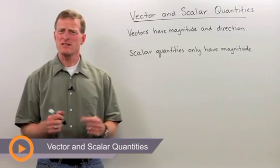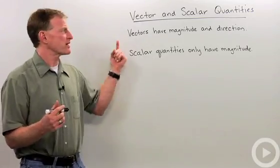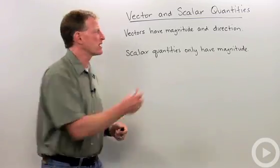How are vectors different from scalar quantities? Well, let's talk about vectors again. Vectors have a magnitude and a direction.